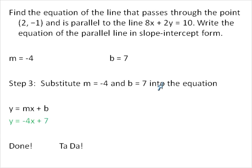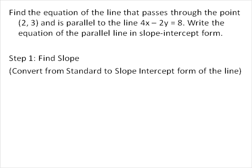That's the slope-intercept form of the line that is parallel to this line and passes through that point. To recap the steps: we found the slope of this line, we used the slope and the point (x, y) to find our value for b which is the y-intercept, and then we substituted m and b into y = mx + b. The next example is going to follow the exact same steps.